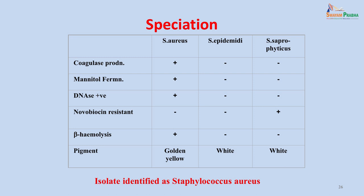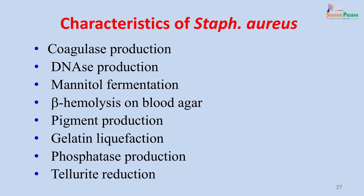To summarize, differentiation between Staph aureus and the coagulase-negative staph can be done on the basis of coagulase production, mannitol fermentation, DNase positivity, beta-hemolysis and golden yellow pigment — all given by Staphylococcus aureus and not by the two important coagulase-negative staphylococci, Staphylococcus epidermidis and Staphylococcus saprophyticus. To differentiate these two, the novobiocin resistance test is used — resistance is given by Staphylococcus saprophyticus and not by epidermidis. The isolate from this patient showed coagulase production, DNase production, mannitol fermentation, beta-hemolysis, pigment production, gelatin liquefaction, phosphatase production and tellurite reduction — definitively identifying it as Staphylococcus aureus.